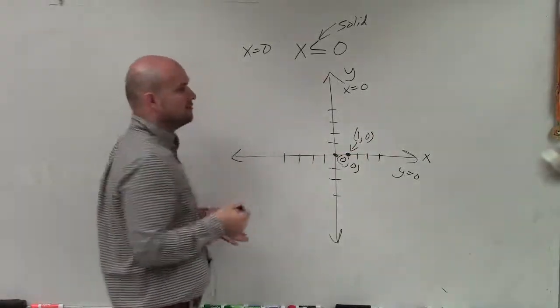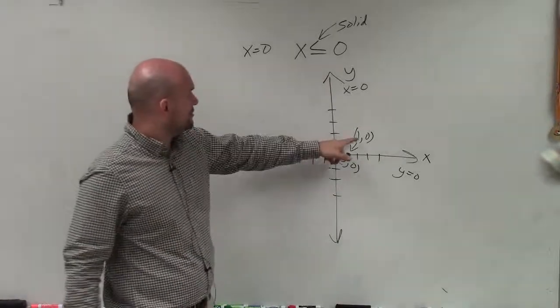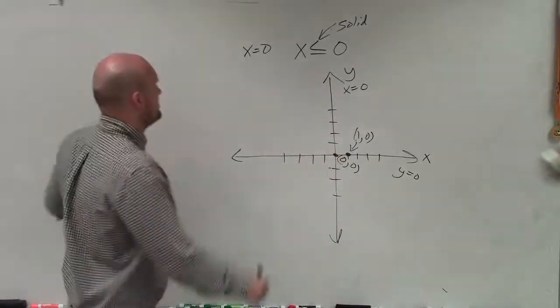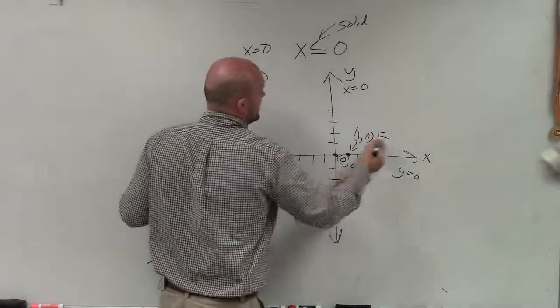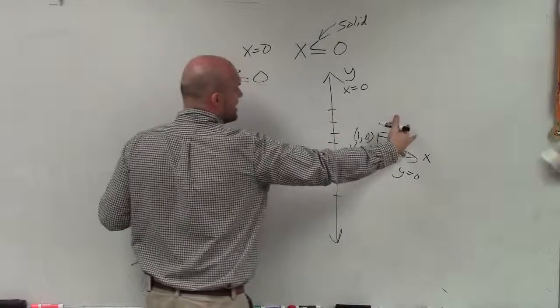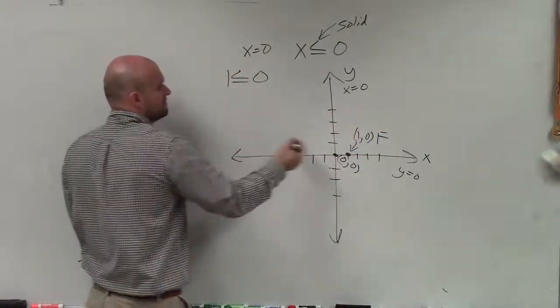And then basically what I'm going to do is plug that value, or the values I can, which x would equal 1, in for there. So I say 1 is less than or equal to 0. Well, that is false. And no matter what number you plug to the right of your boundary line, they're always going to be false.